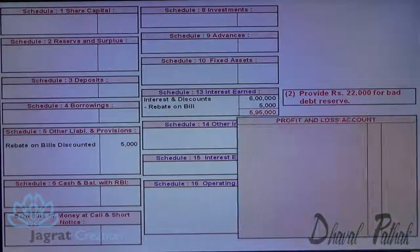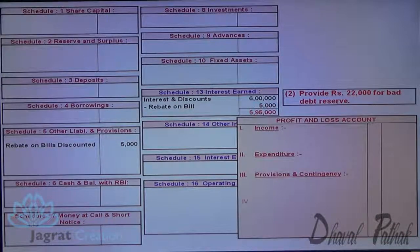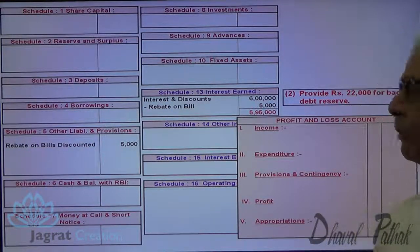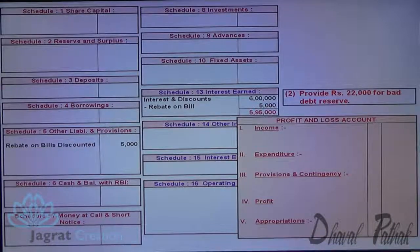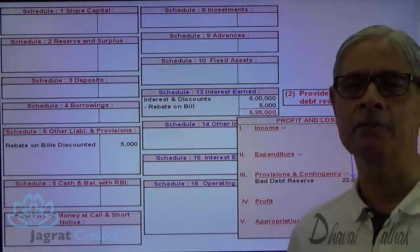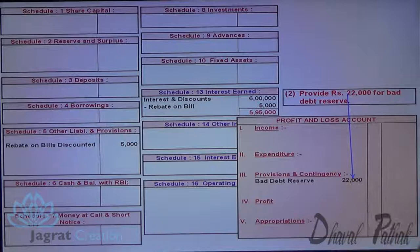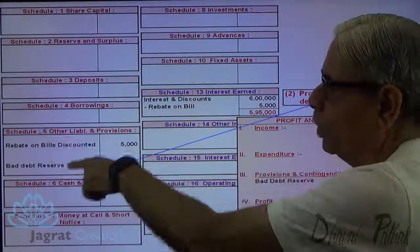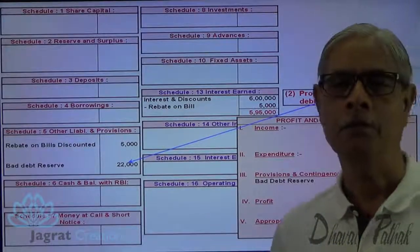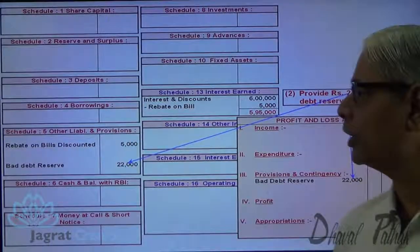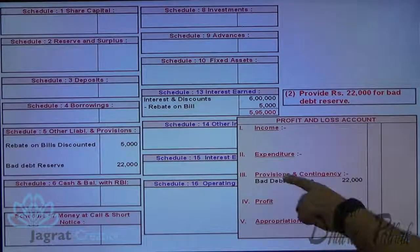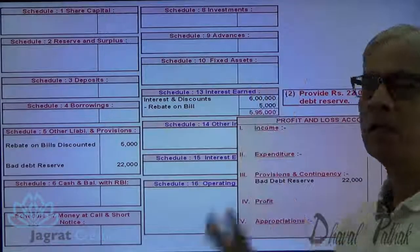The profit and loss account is bifurcated into income, expenses, provisions and contingencies, then profit and appropriation. Provision for bad debt reserve will appear in provisions and contingencies — I write it in the inner column because I am also required to write the tax provision in subsequent adjustments. The second effect will go to schedule 5 as bad debt reserve. So the second adjustment has two effects: one in provisions and contingencies, and the second in other liabilities.